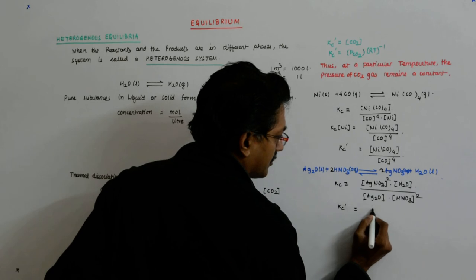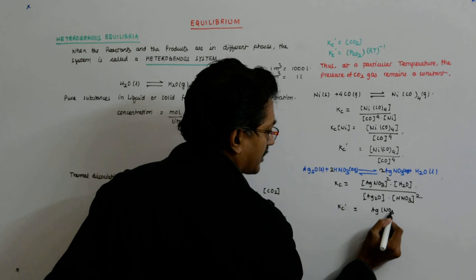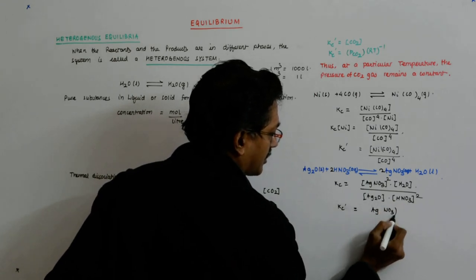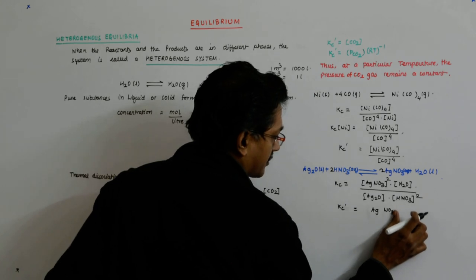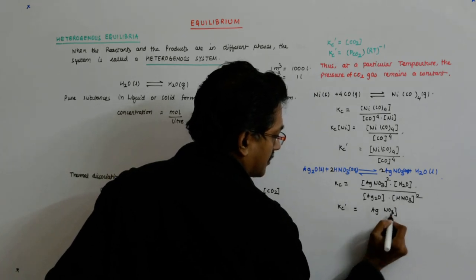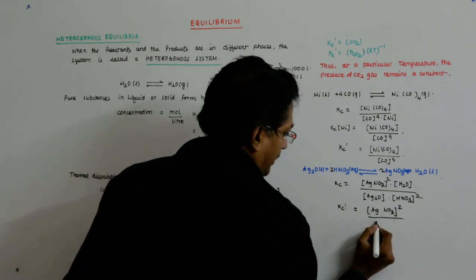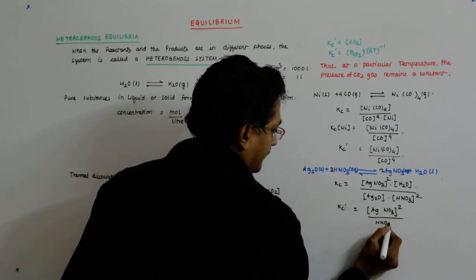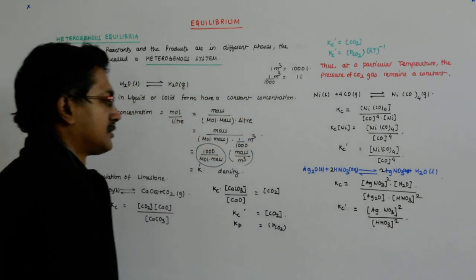Kc' is equal to AgNO3 concentration whole square divided by HNO3 whole square. Correct.